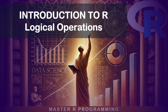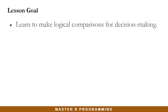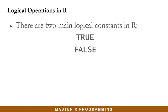Hello, everyone. In this video, I will guide you on how to use logical operations in R. By the end of this lesson, you will learn to make logical comparisons for decision-making. There are two main logical constants in R: TRUE and FALSE, and be mindful of the fact that they are in uppercase letters. They are very essential for making decisions based on certain conditions. Let's go to RStudio and see how they work.